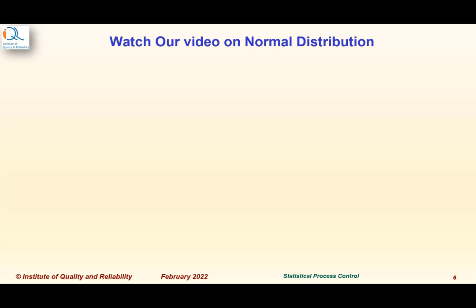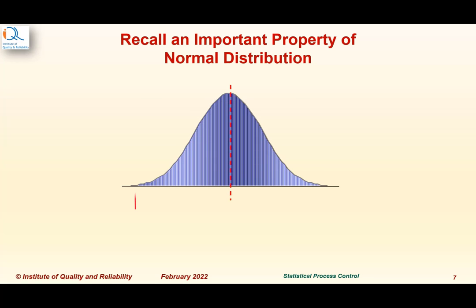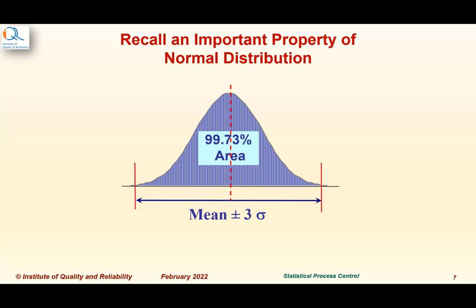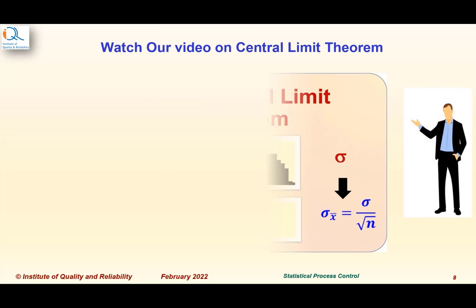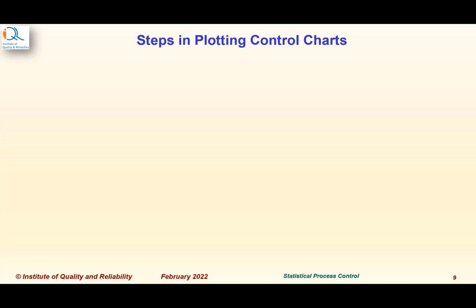We recommend viewers to watch our video on normal distribution and recall that mean plus or minus 3 sigma includes 99.73% of area or variation. We also recommend watching our video on the central limit theorem, which states that when we take random samples of equal size n from any distribution and take averages, those averages tend to be normally distributed with standard deviation sigma X-bar equal to the original sigma divided by the square root of n.